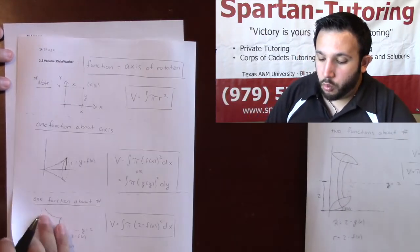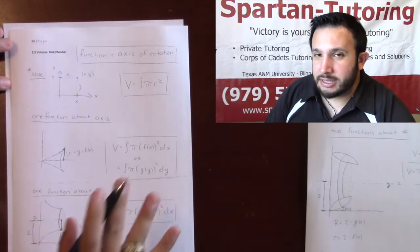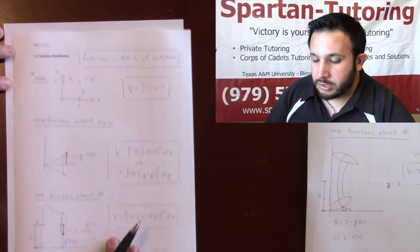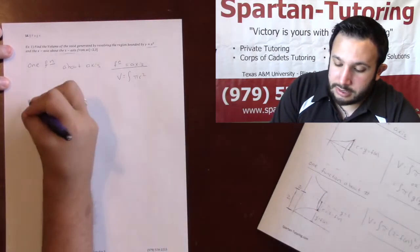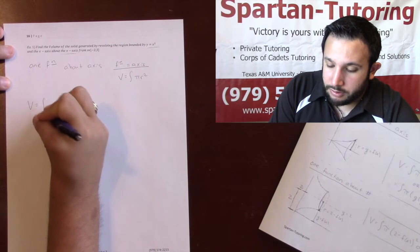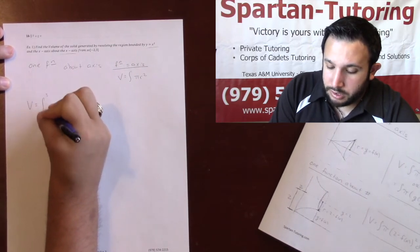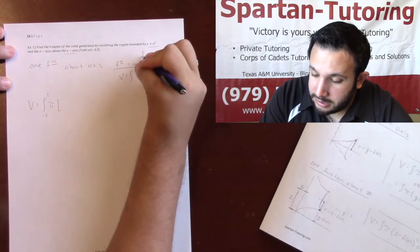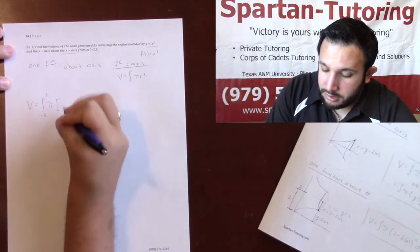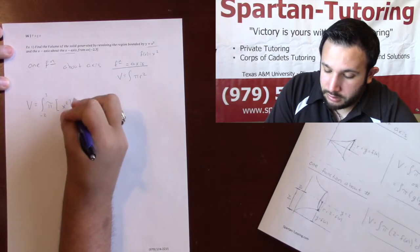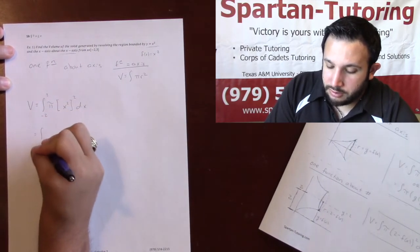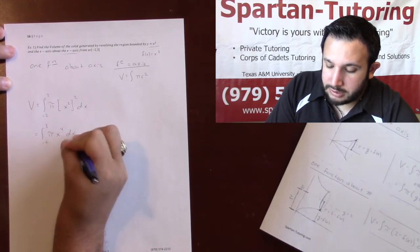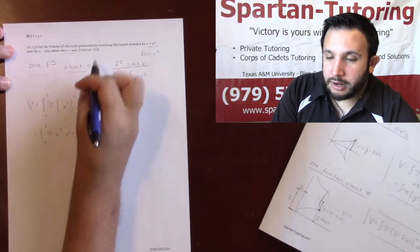With one function rotated about an axis, don't overthink it — it's just the integral of pi times your function squared. So volume will be the integral from negative two to three of pi times f(x) squared. Here f(x) equals x squared, so that becomes the integral from negative two to three of pi times x to the fourth dx.